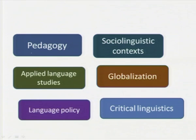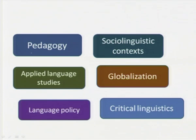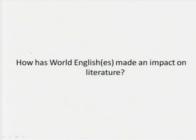If you get a question like 'delineate the scope of world Englishes,' we saw that the scope is indeed very huge. It begins with the study of the history and emergence of different varieties of Englishes, then the diasporas, variations, acculturation with native cultures, what is entailed in bilingual creativity, and most importantly perhaps, the political and ideological implications and issues in this phenomenon called world Englishes. There are also issues of pedagogy, sociolinguistic contexts, applied language studies, globalization, language policy, and critical linguistics.